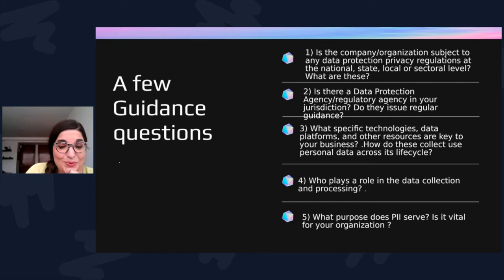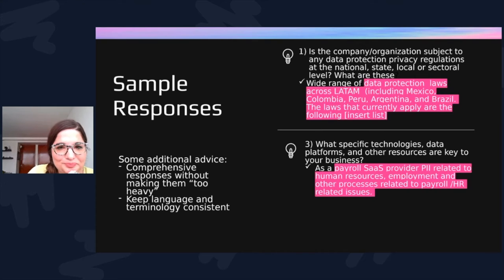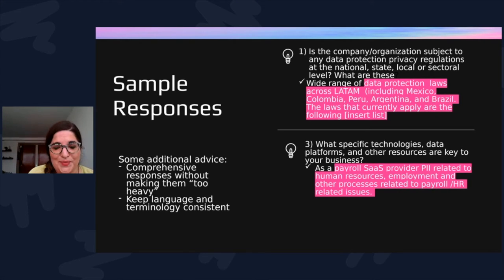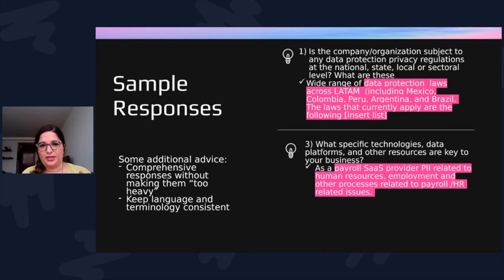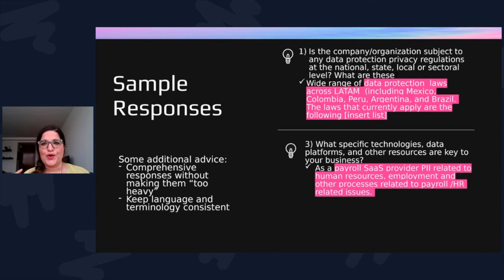Here are a few example questions. The first: is the company or organization subject to any data protection or privacy regulations at a national, state, local, or sectoral level — what are these? For my company, it's a wide range of data protection laws across Latin America, including Mexico, Colombia, Peru, Argentina, and Brazil. My keywords here would be 'data protection,' 'Latin America,' and the list of countries. The goal is to get to core keywords in just a few sentences or a paragraph — like an abstract — moving from 'this is my privacy program' to 'these are the specific aspects I need to monitor.'